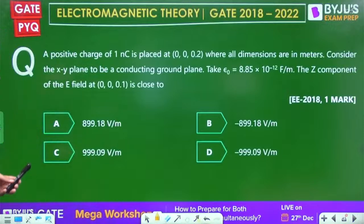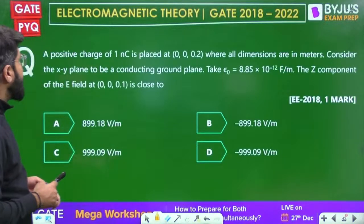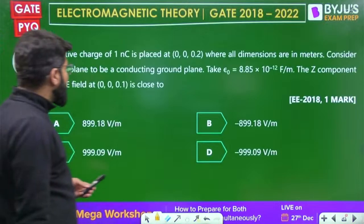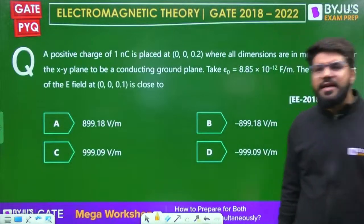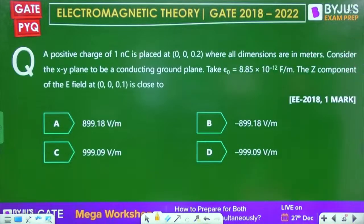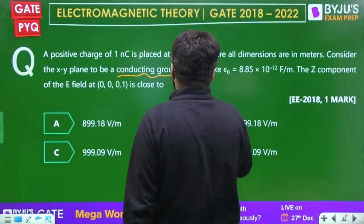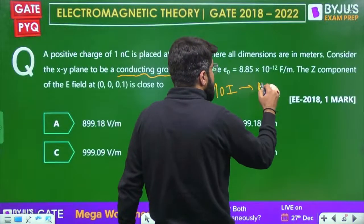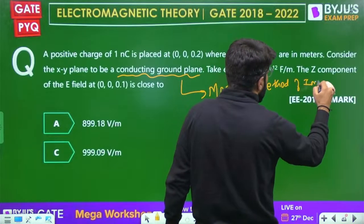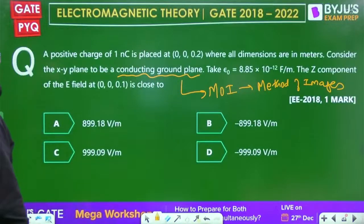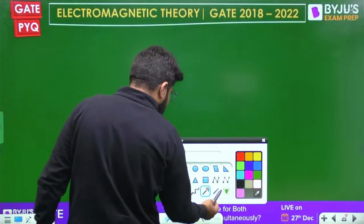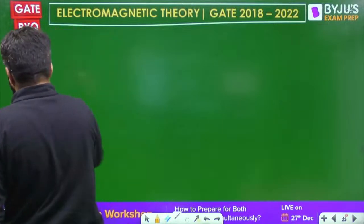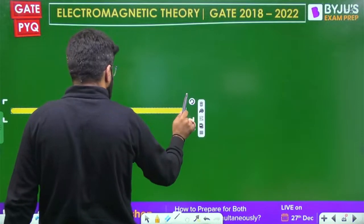Next important question: a positive charge of 1 nano coulomb is placed at (0, 0, 0.2) where all dimensions are in meters. The XY plane is a conducting ground plane. What is the Z component of the electric field at (0, 0, 0.1)? Whenever you see a source above a conducting ground plane, apply the method of images. The XY plane at Z=0 acts as the grounded conducting plane and the source is at Z=0.2 on the Z-axis.